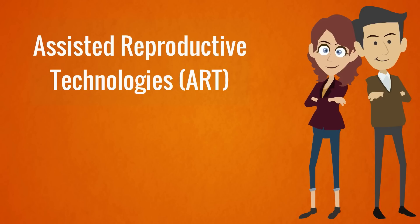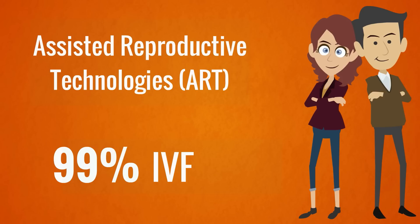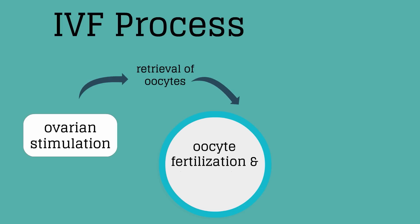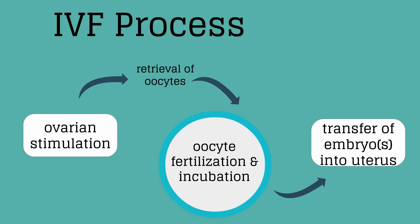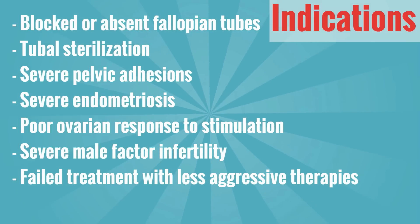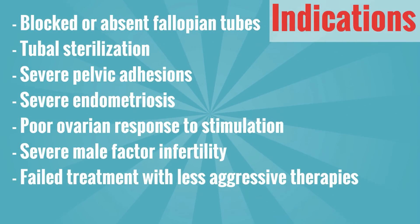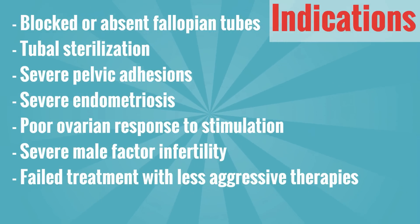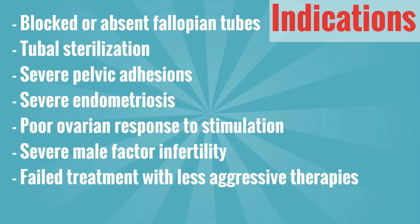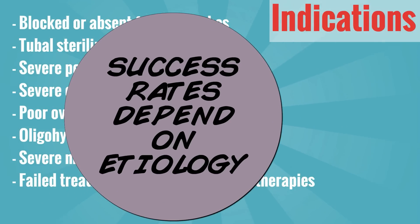Let's now move to assisted reproductive technologies. In the United States, in vitro fertilization (IVF) accounts for 99% of all ART procedures. The IVF process involves ovarian stimulation to produce multiple follicles, retrieval of oocytes from the ovaries, oocyte fertilization and embryo incubation in the laboratory, and then transfer of embryo or embryos into the woman's uterus through the cervix. There is an approximate 30% risk of multiple gestations with IVF, depending on the number of embryos implanted. Indications for IVF include blocked or absent fallopian tubes, history of tubal sterilization, severe pelvic adhesions, severe endometriosis, poor ovarian response to stimulation, severe male factor infertility, and failed treatment with less aggressive therapies. Success rates for IVF will depend on the etiology of the infertility.